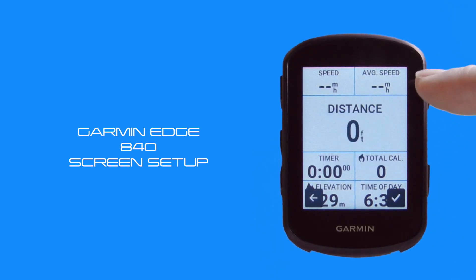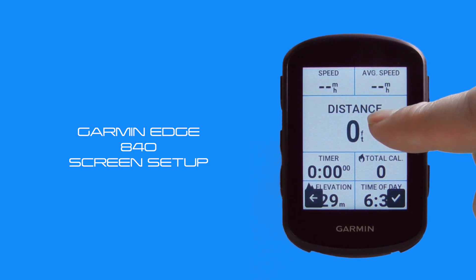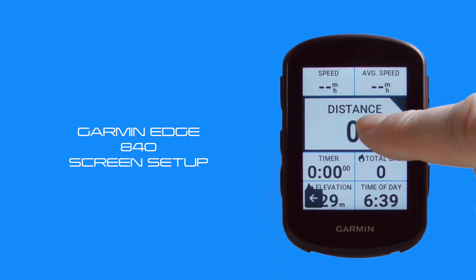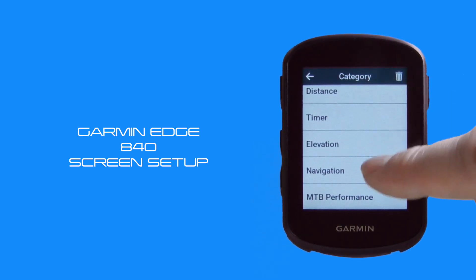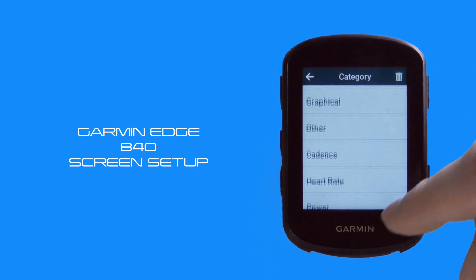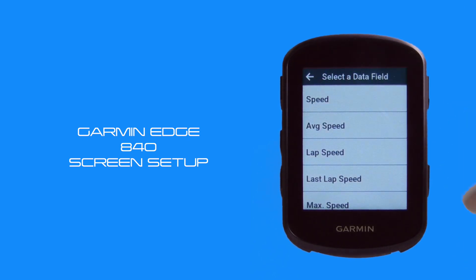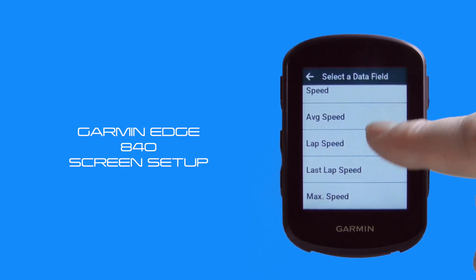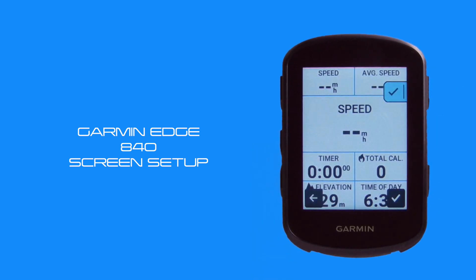Once you're happy with the layout, select the forward arrow from the bottom right hand side. You can then tap a field to swap it or double tap a field to edit it. If we tap on the distance data field in the middle, it will highlight, then tap on it again and it takes us into the data field categories. There's a range of options — speed, elevation, navigation, power, etc. We'll tap on the speed category to go into the actual data fields available, and select the basic speed data field.